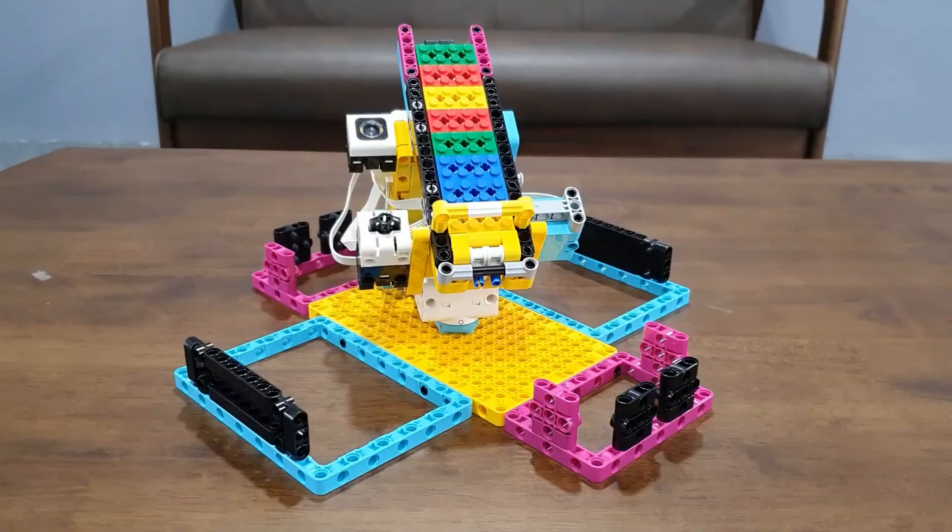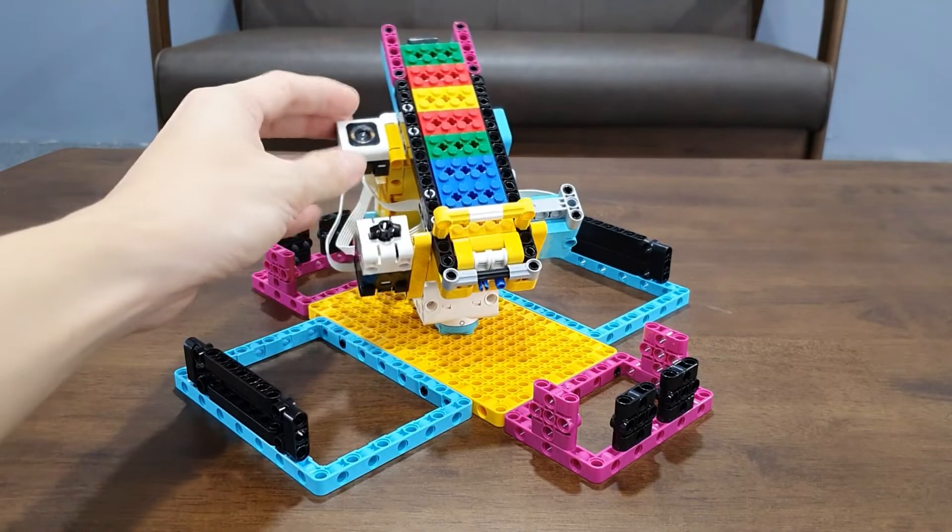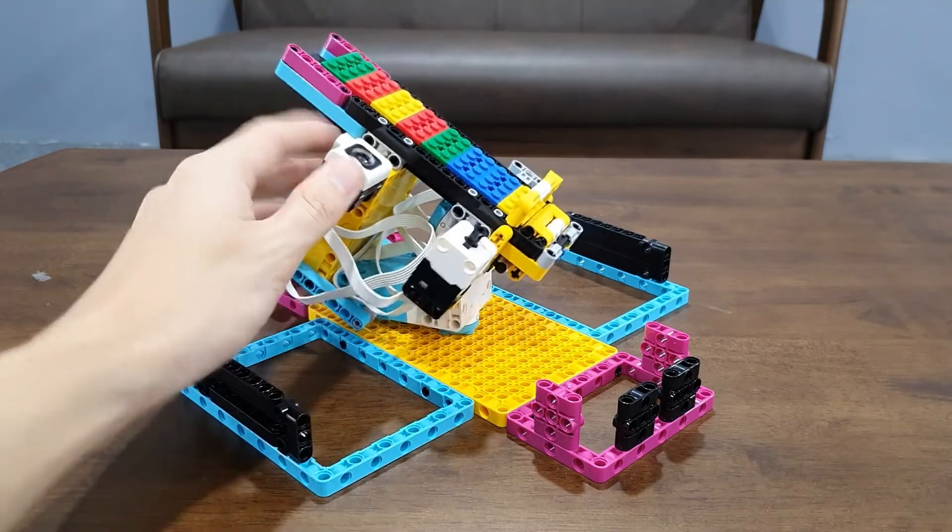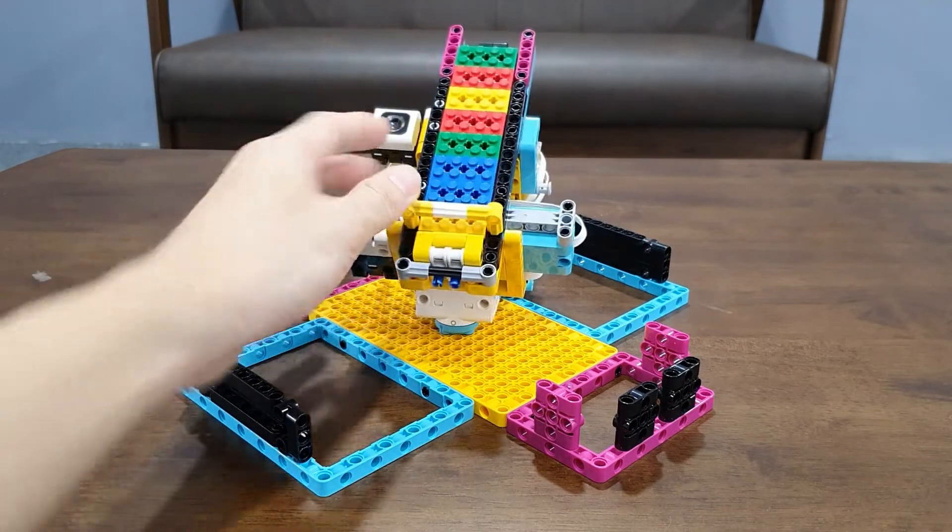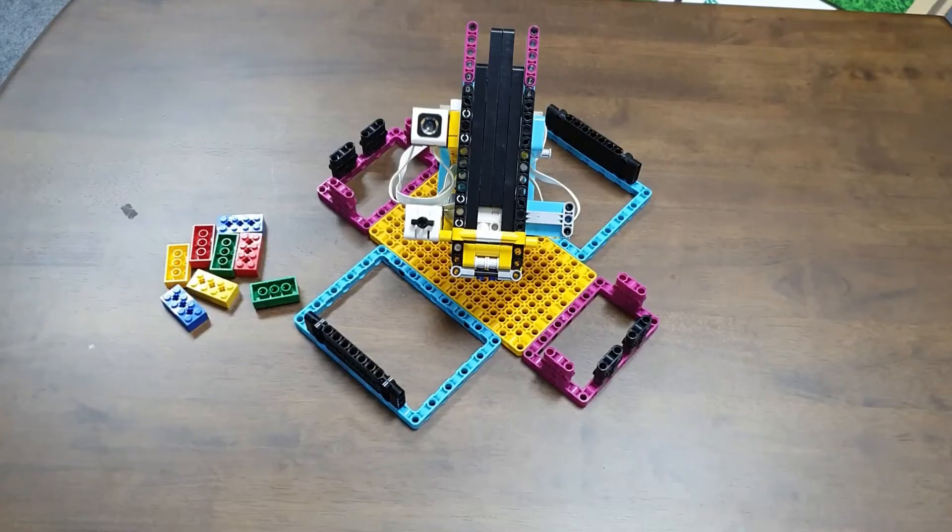So I decided to create my own colour sorter. This colour sorter comes with one touch sensor, one colour sensor, and two motors. One large motor for the turning and one medium motor for the ejection of the cube. And this is how it works.